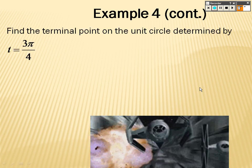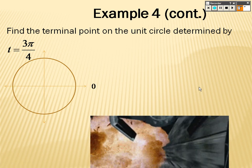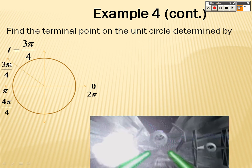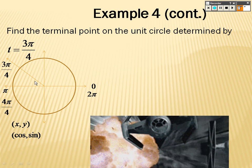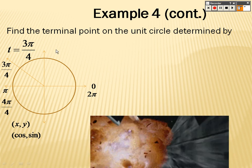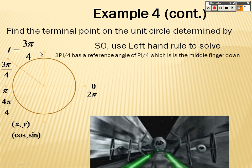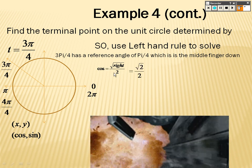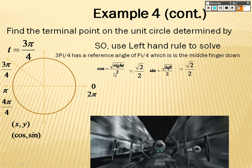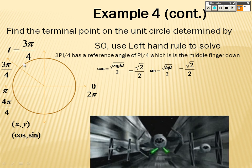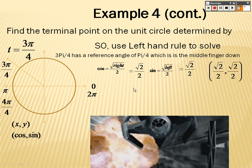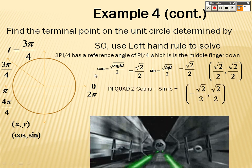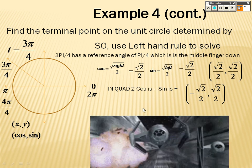Find the terminal point in the unit circle determined by 3π/4. Pi is 4π/4 over there, so 3π/4 lands just before it. Again, x is cosine, y is sine, and the reference angle is π/4 — middle finger again. So square root of the right over 2 is √2/2, and square root of the left over 2 is √2/2. But in this quadrant — 'All Students' — sine is positive but cosine is negative. So the answer is (-√2/2, √2/2), because you go in the negative x-direction and then positive y-direction.